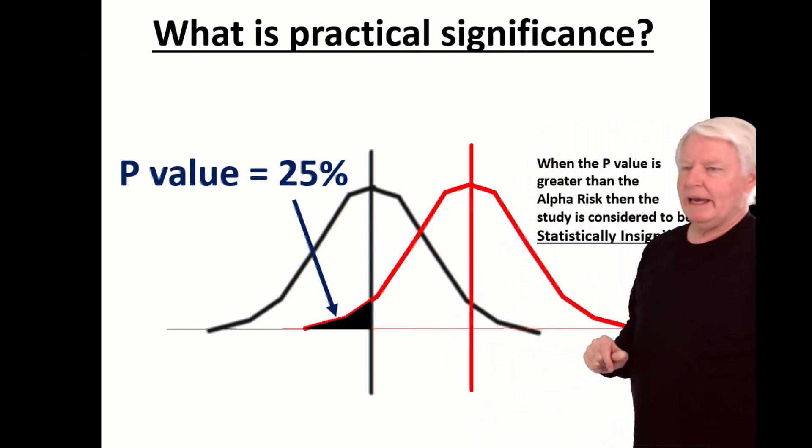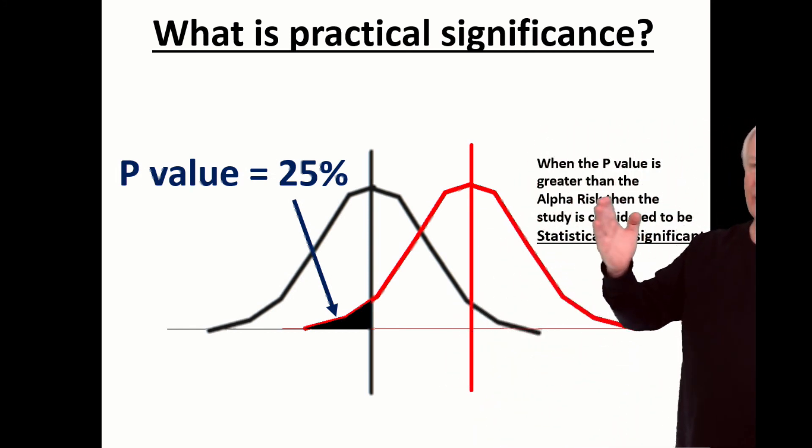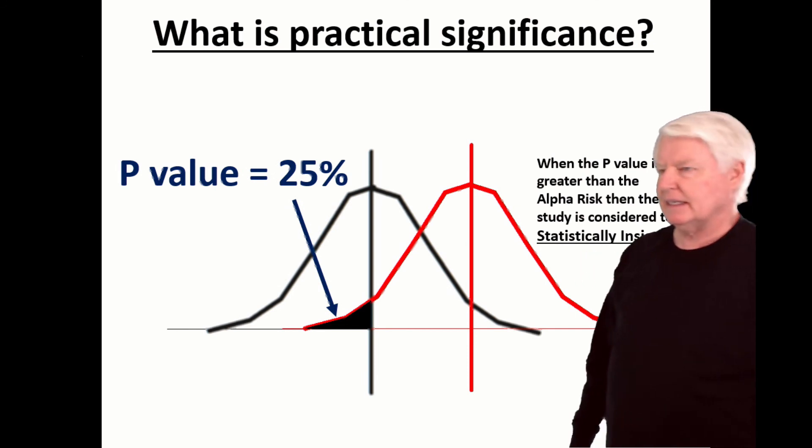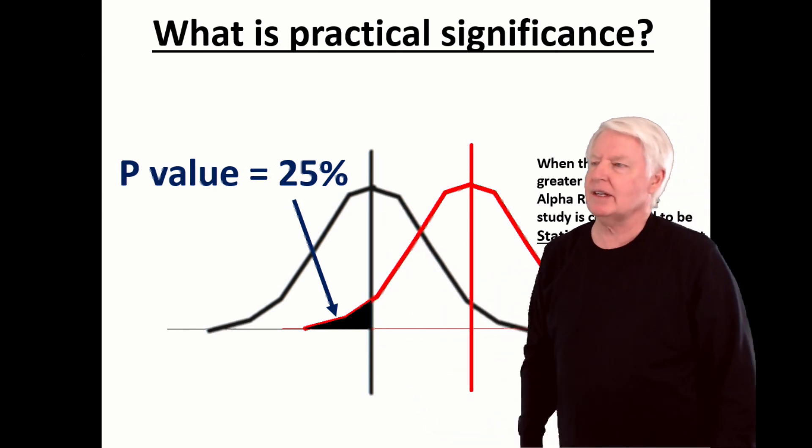All right, what do we have here? When the p-value is greater than the alpha risk, then the study is considered to be statistically insignificant. We already talked about that, so that's just a summary.